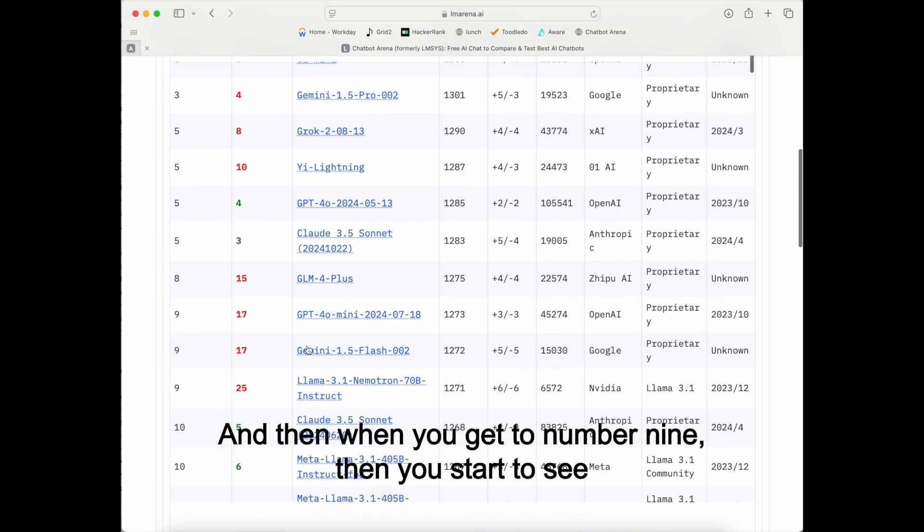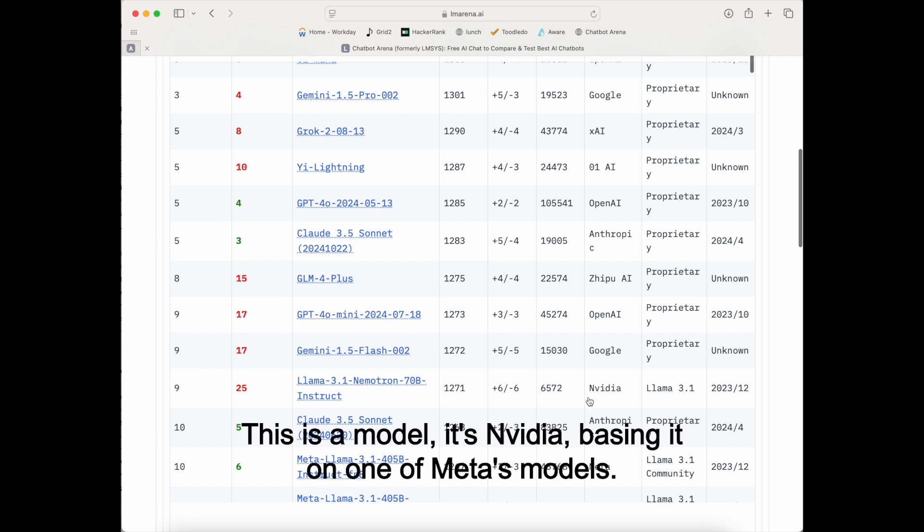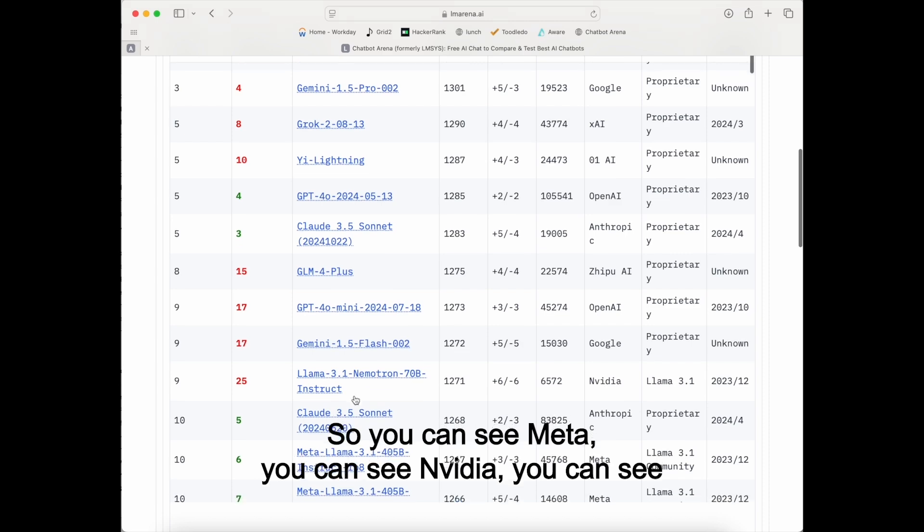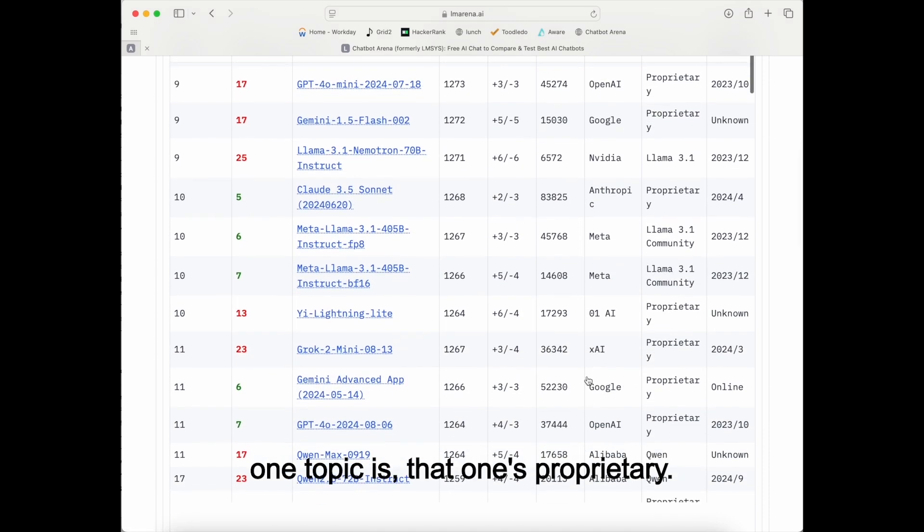And then when you get to number nine, then you start to see a more open license, LAMA 3.1. This is a model. It's NVIDIA basing it on one of META's models. So you can see META, you can see NVIDIA, you can see, well, Anthropic is, that one's proprietary.